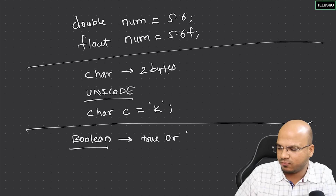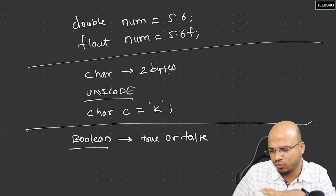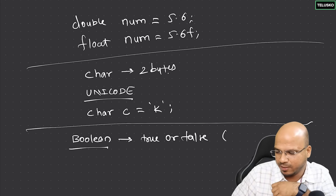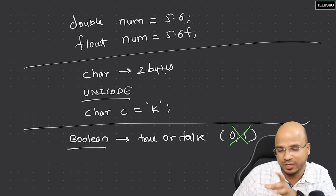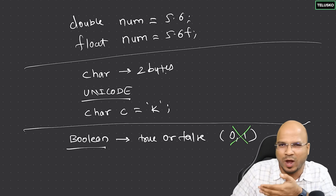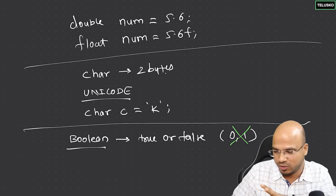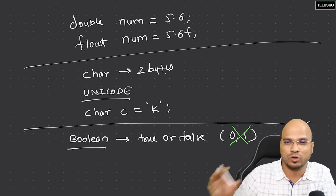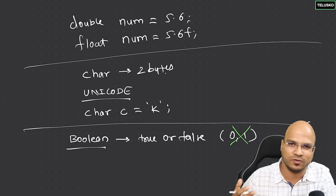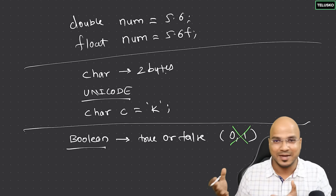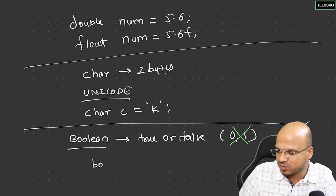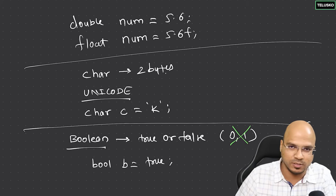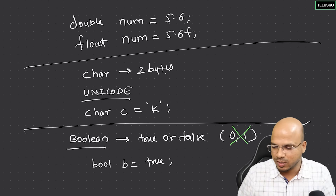Boolean will only accept true or false — there are no subtypes. In other languages boolean may be represented with 1 and 0, but in Java it does not work with 0 and 1 — it is strictly true and false. It is normally used for conditions: if you want to check a condition and do something based on it, that's where boolean is used. To define a boolean variable, use the keyword boolean, give it a name like b, and assign either true or false.